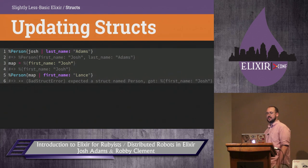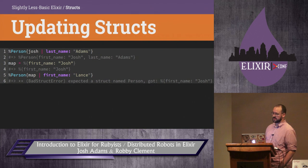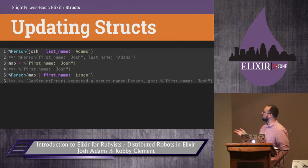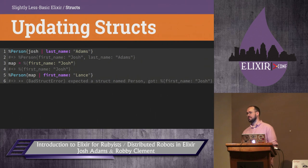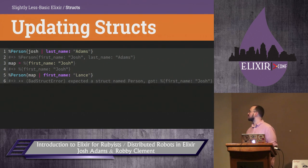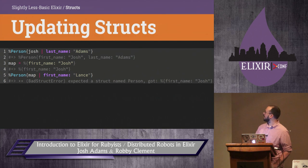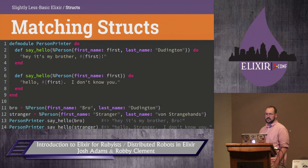You can use the map update syntax to update structs, and they'll verify that the data you're updating is a struct of the appropriate type. If you try to update just a normal map with a struct's update method, it'll fail. So that'll catch bugs. If you accidentally pass the wrong type of value into a function, it'll crash right there instead of updating some address with a last name, which is what you might accidentally do.